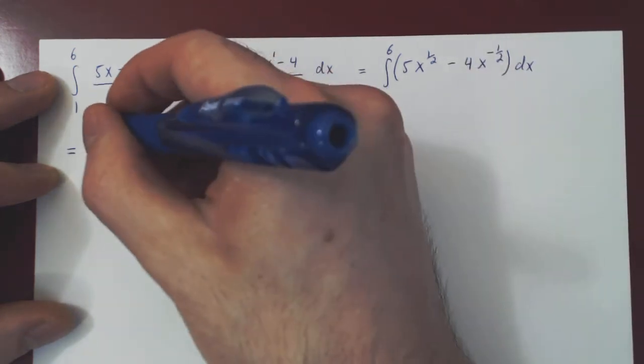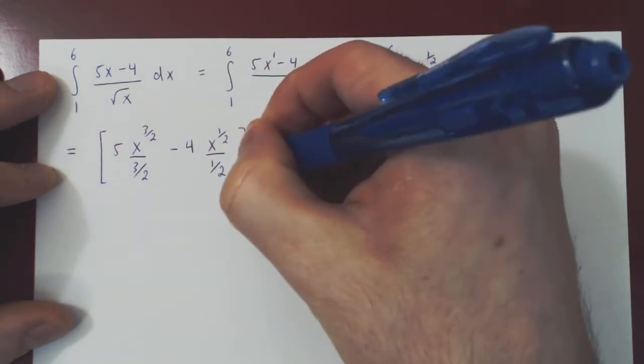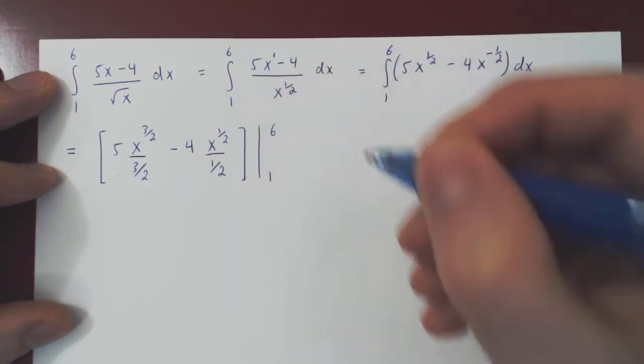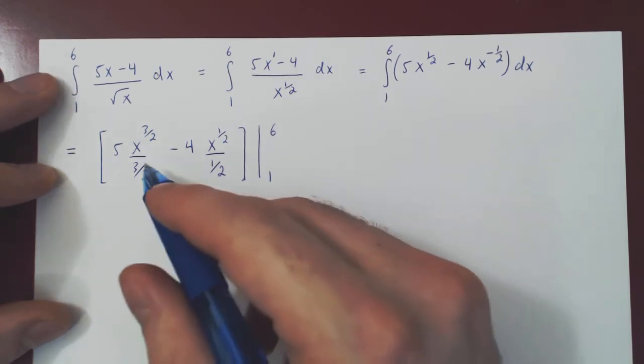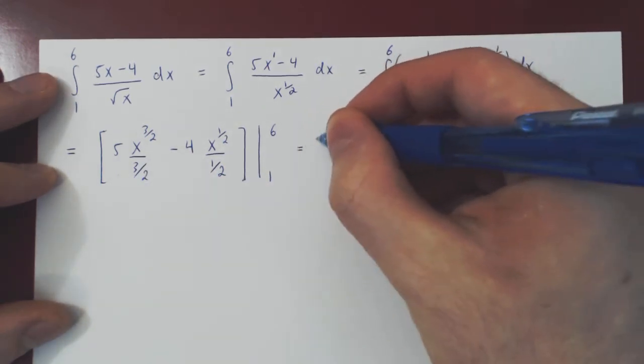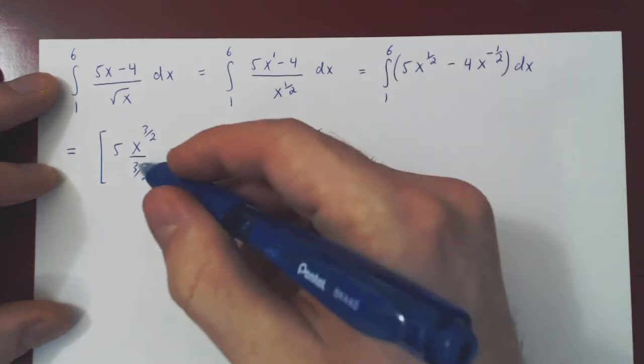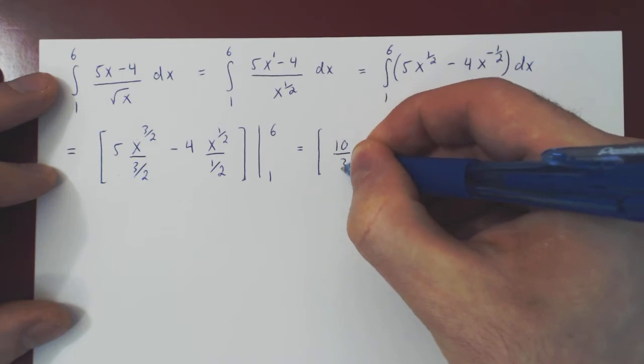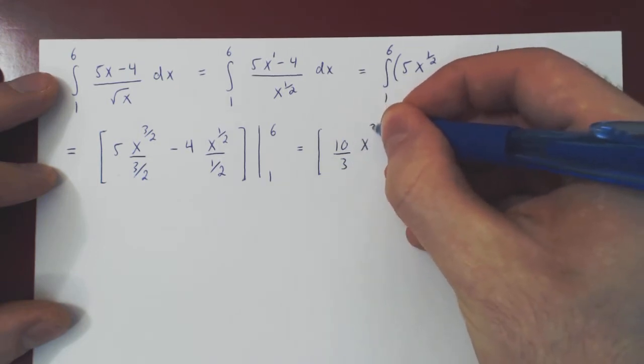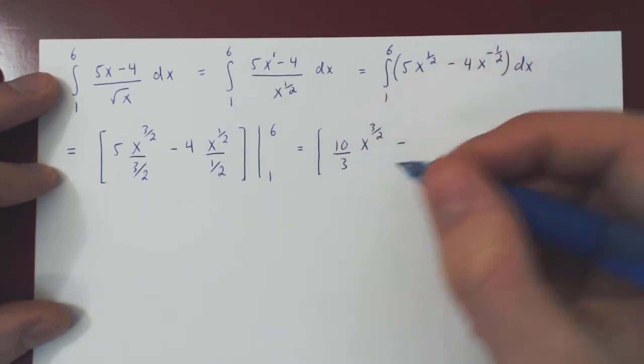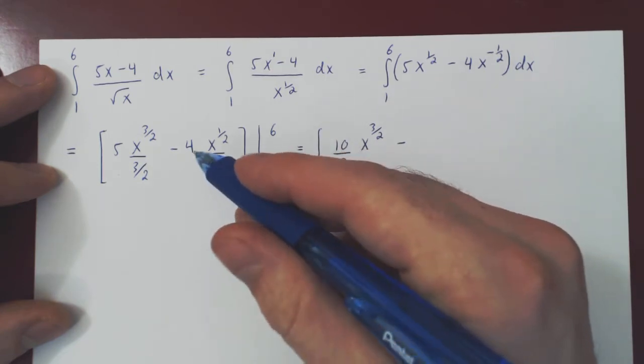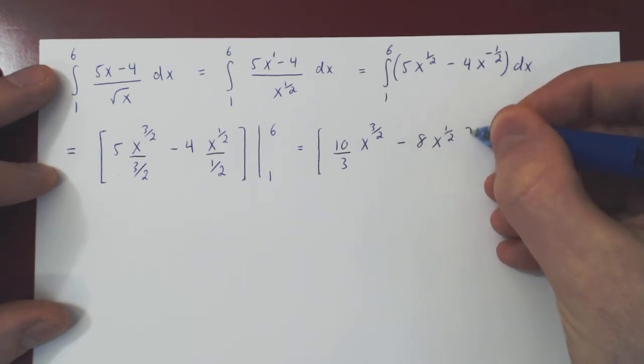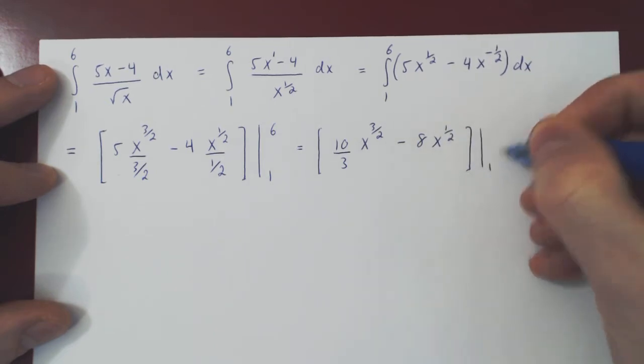Constant multiple stays there. Negative 1 half plus 1 is positive 1 half, divided by the new power, 1 half. That's the anti-derivative, and we must evaluate this at both endpoints and subtract. Therefore, using the fundamental theorem of calculus, before though we'll simplify a little bit. Divide by 3 half, multiply by 2 thirds, so you get 10 over 3. So 10 over 3, x to the 3 half, minus, divide by a half, multiply by 2, so you get minus 8, x to the 1 half, from 1 to 6.